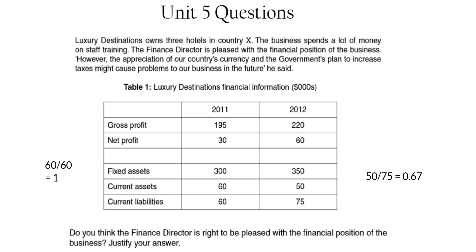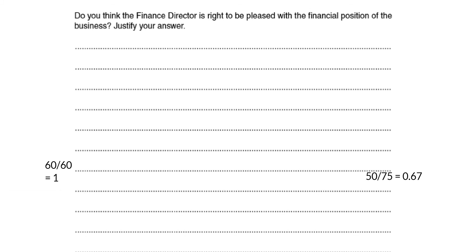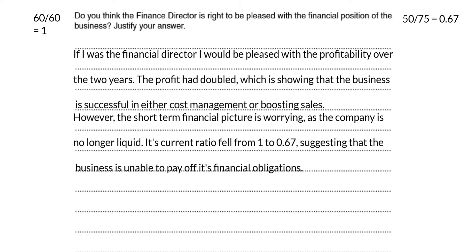This answer is going to present an argument between profitability and liquidity — one argument based on profitability, one based on liquidity, then a weighted conclusion. In my analysis: if I were the financial director I would be pleased with the profitability over two years — the profit has doubled, showing the business is successful. However, the short-term financial picture is worrying as the company is no longer liquid. The current ratio fell from 1 to 0.67, suggesting the business is unable to pay off its financial obligations. Just stating that profit has doubled shows the examiner you've engaged with the financial information, and calculating the ratio is application of the data.